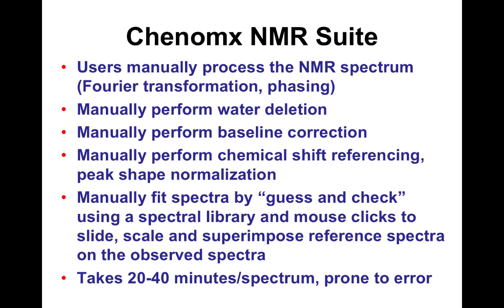The NMR suite from Konomics has been around almost 20 years. Users manually process the NMR spectrum — Fourier transform, phasing, removing the water peak (110 molar protons), baseline correction, normalizing peak shapes, and chemical shift referencing. Once the spectra look good, it's essentially a guess-and-check process: with a library of about 300–400 spectra, you click on different compounds and drag reference spectra to see if they fill the observed peaks — like superimposing jigsaw pieces.